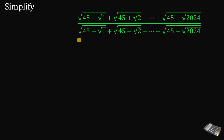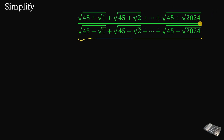Our goal in this question is to simplify this expression: square root of 45 plus square root of 1, plus square root of 45 plus square root of 2, all the way down to square root of 45 plus square root of 2024. And in the denominator, the positive symbol is changed into negative. Our goal is to evaluate this without using any calculator.